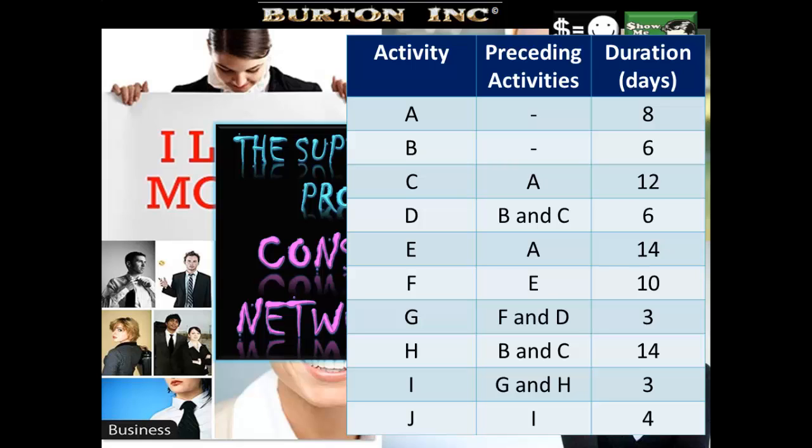E precedes A. F precedes E. G can't get underway until F and D are completed. H can't get underway until B and C are completed. I can't get underway until G and H are completed, and J needs to be preceded by I. So you can see that this one is quite a lot more complicated than the previous example. How do we go about laying that out?